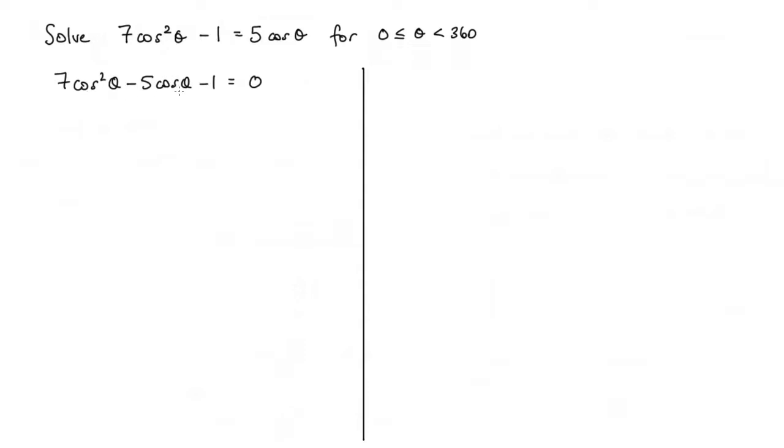Now looking at this, it looks like a quadratic. So what I can do, I'm going to make a substitution here. I'm going to say let x equal cos theta. I'm just doing that to make it a little bit simpler. So by doing that, I've got 7x squared minus 5x minus 1 equals 0.